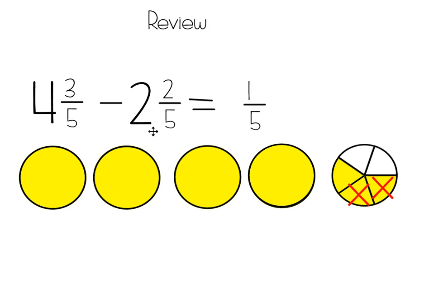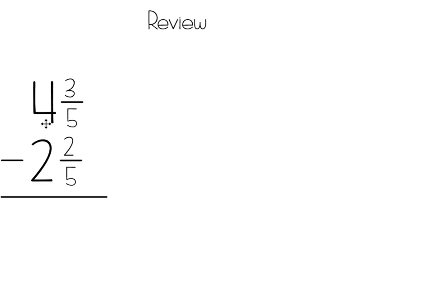And then when I subtract the holes, I'm going to cross out 2 holes. So 1, 2, and I have 2 holes left. So my answer for the difference between 4 and 3 fifths minus 2 and 2 fifths is 2 holes and 1 fifth. If we show this with the algorithm or in written form, we start by lining them up vertically or stacking the numbers. I line up the fraction parts and I line up the whole numbers. 3 fifths minus 2 fifths, I know that the denominator stays the same. 3 minus 2 is 1 fifth. And then the holes, 4 minus 2 is 2 whole. So my answer, my difference is 2 and 1 fifth.